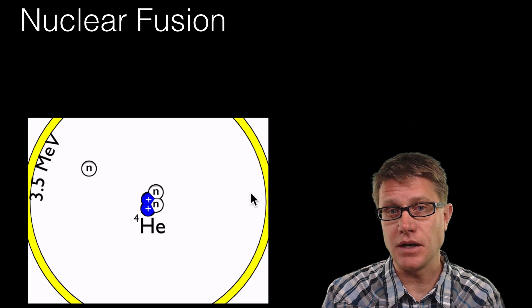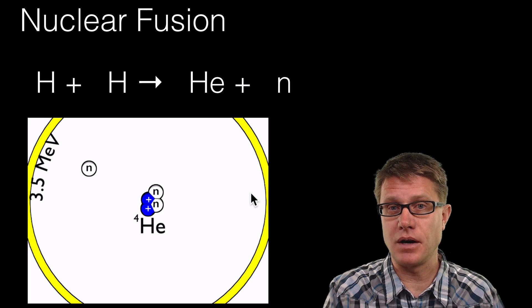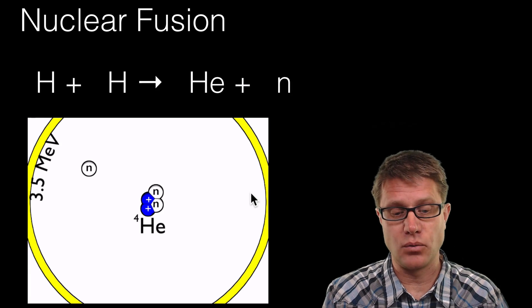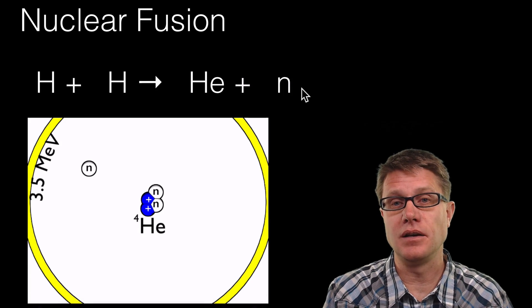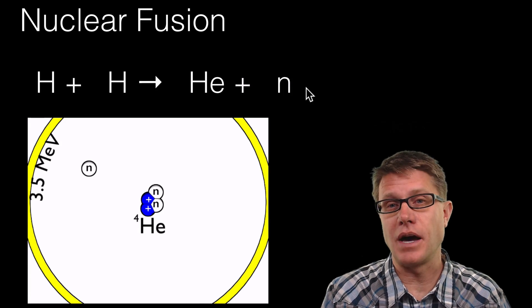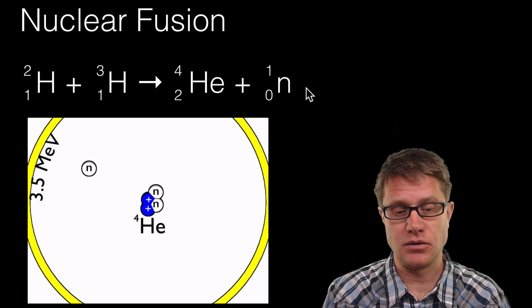So we first of all write out what are the particles before and after? What are the nuclei before? We have the hydrogens before. And then we have the helium and the neutron when we are done. We now write it in AZX notation. So it would be like this.